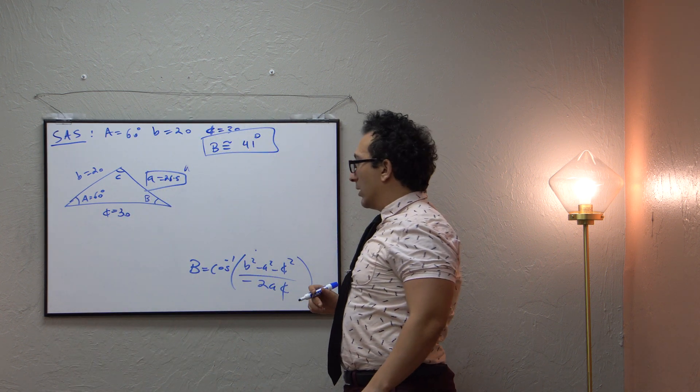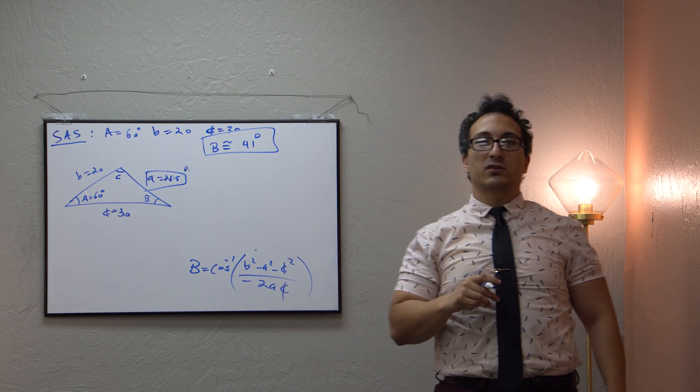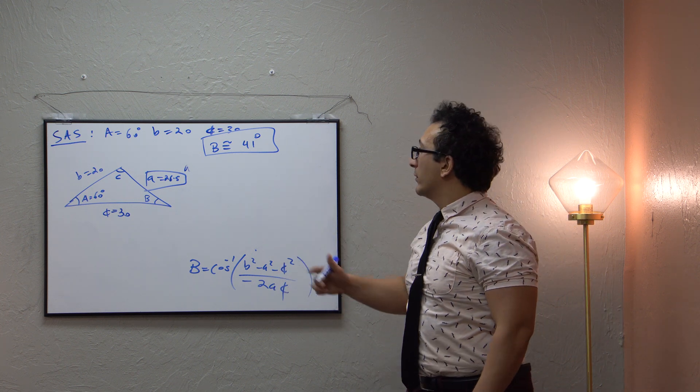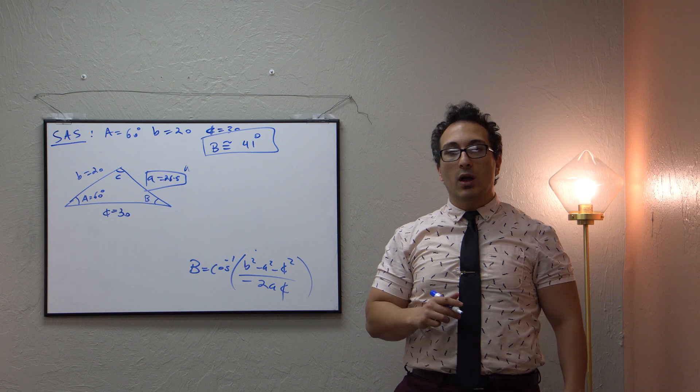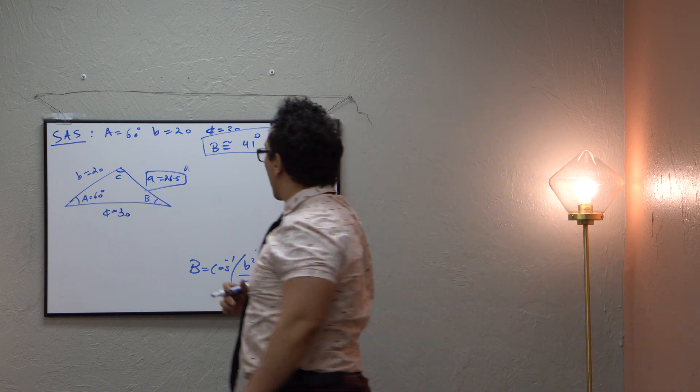Now I know what you're thinking. Well, I remember during the laws of sines that I had to now also check for 180 minus the angle that we got. Do we have to do this here? Actually, no. In the law of cosines, you don't have to do that. It's only in the law of sines.